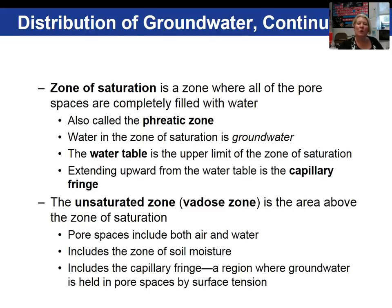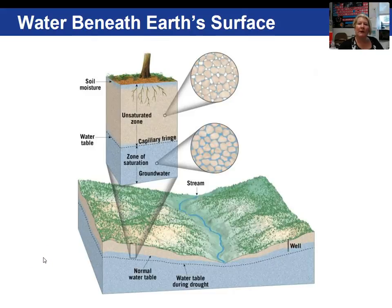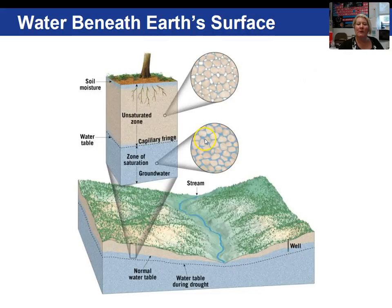The phreatic zone or zone of saturation is an area underground where 100% of the pore spaces are filled with water. The very top of the zone of saturation we call the water table. Sitting right on top of the water table is the capillary fringe. The unsaturated zone is the area above the zone of saturation — water is in some pore spaces but air in others, so it's not completely saturated. Technically, the capillary fringe and the zone of soil moisture are part of the unsaturated zone. This figure clearly outlines these zones: soil moisture, unsaturated zone, capillary fringe, the water table shown as a dashed blue line, and below that the zone of saturation where 100% of the pore space is filled with water.